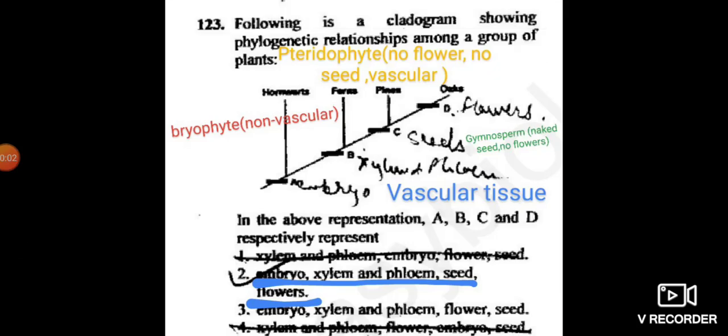Hello, welcome back to Tenure Biocense. Today's topic is about a cladogram showing the phylogenetic relationship among a group of plants. It is a part C question of Cesar Net Life Sciences. Let's get started.